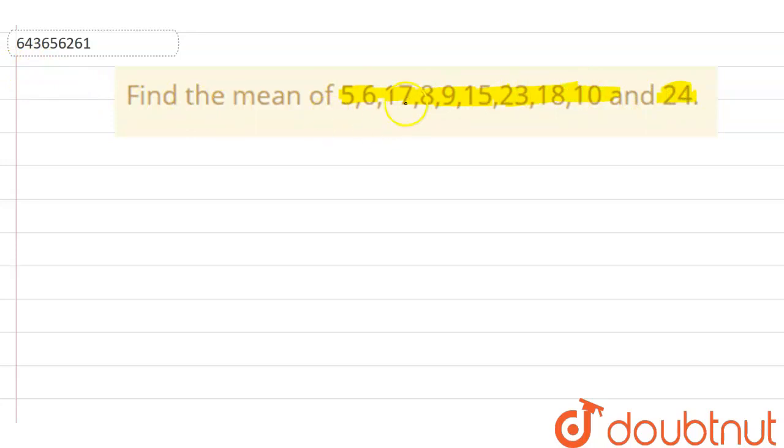Yes, the question asks to find the mean. We know that mean is equal to the sum of these observations - that means sum of 5 plus 6 plus 17 plus 8 plus 9 plus 15 plus 23 plus 18 plus 10 plus 24 - divided by the total number of observations.